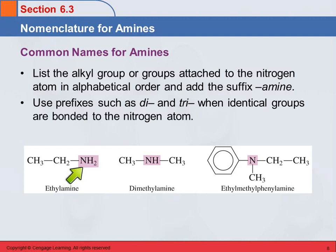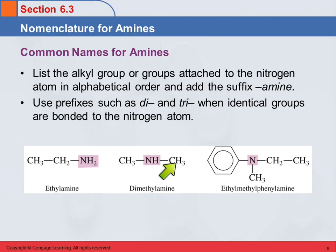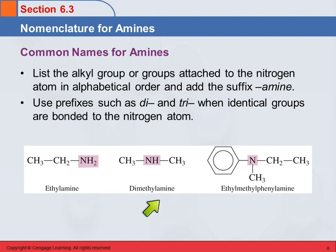Here we look at this one. There's an ethyl group attached — that's the only group — so we call this ethylamine. This is a secondary amine. It has two methyl groups attached to it. Since we have two groups that are the same, we use the prefix di. So this is dimethylamine.